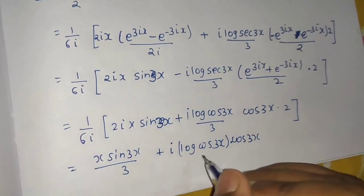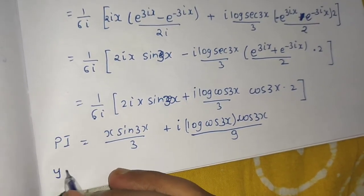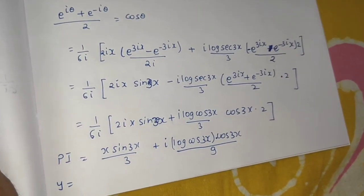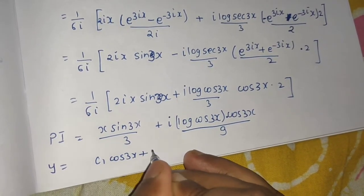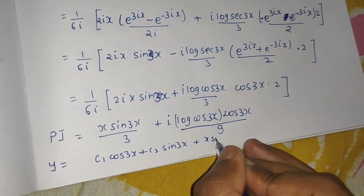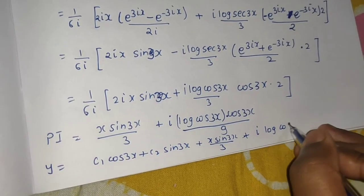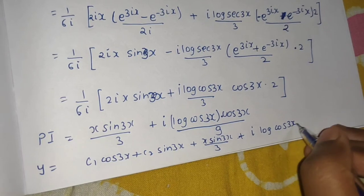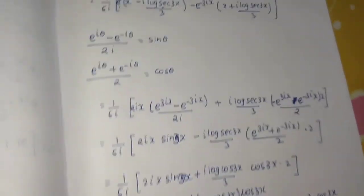The particular integral is x·sin3x/3 + i·log(cos3x)·cos3x/9. The final answer is y = CF + PI = c₁cos3x + c₂sin3x + x·sin3x/3 + i·log(cos3x)·cos3x/9. This was the new Rule 6 applied to a problem with sec(3x) on the RHS, and it turned out to be a manageable problem once the rule was understood.